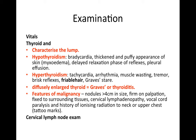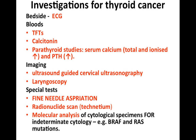For investigations: bedside, do an ECG looking for arrhythmias. Bloods include thyroid function tests, calcitonin, thyroid stimulating hormone, and parathyroid studies including serum calcium, total and ionised calcium, and parathyroid hormone. Imaging: perform ultrasound-guided cervical ultrasonography and laryngoscopy. Special tests: fine needle aspiration (FNA) biopsy of the lesion, often done alongside ultrasound. A radionuclide scan such as technetium to assess for metastases, and molecular analysis of cytological specimens from FNA for indeterminate cytology — for example, looking for BRAF and RAS mutations.